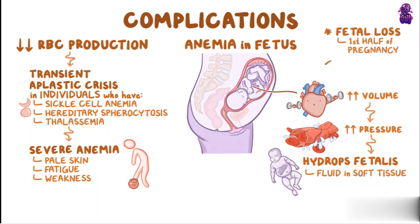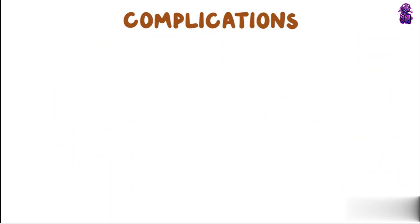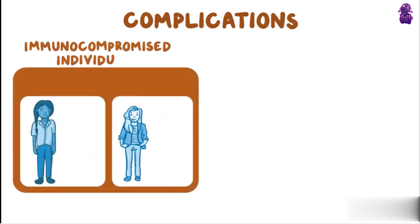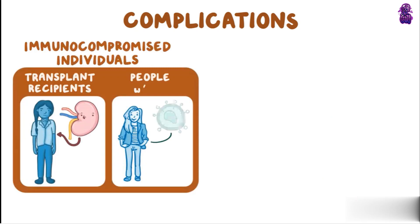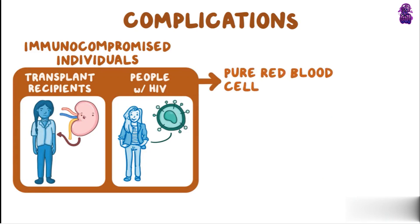The good news is that there are no fetal defects associated with Parvovirus B19 for those fetuses that survive the infection. Lastly, immunocompromised individuals, like organ transplant recipients and people with HIV, can develop a serious complication from Parvovirus B19 called pure red blood cell aplasia.